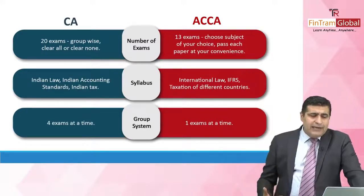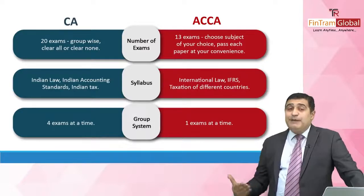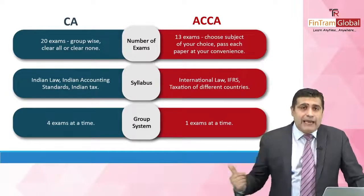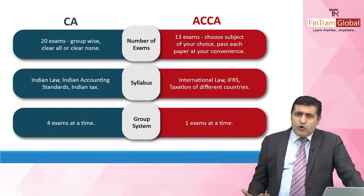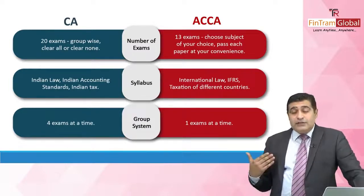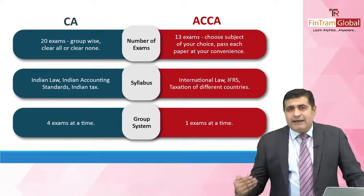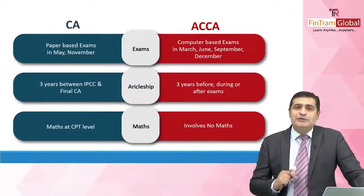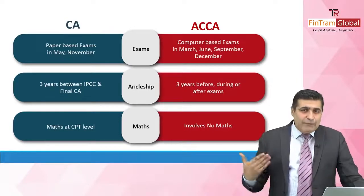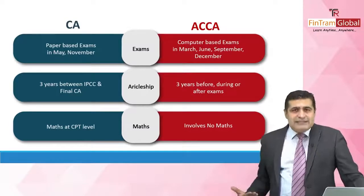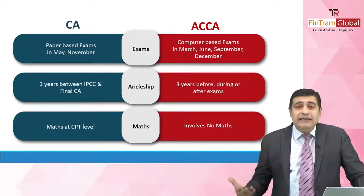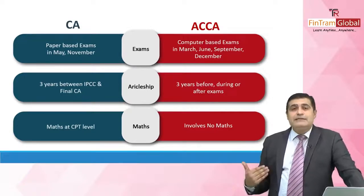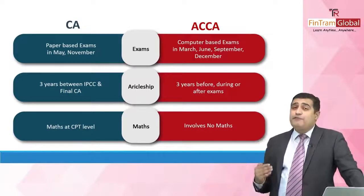In the CA group system you have to give 4 exams at a time, whereas in ACCA you can give 1 exam at a time and move on. CA is a paper-based exam in May and November, whereas ACCA happens 4 times a year — March, June, September, December — and it's a computer-based exam. You can give the exam from your home. For articleship, if you have already completed your CA articleship, it can be considered from the ACCA standpoint, meaning you would have no additional articleship requirement.